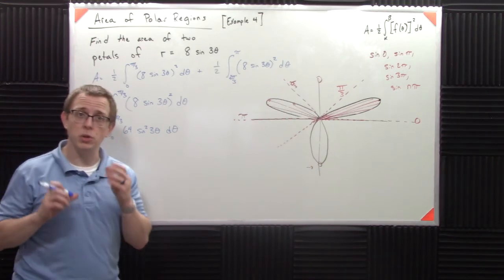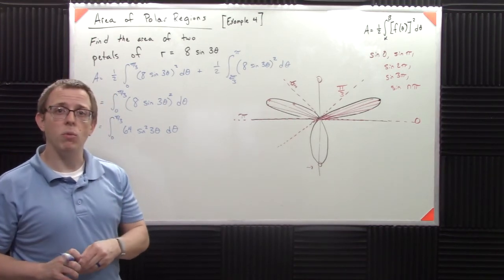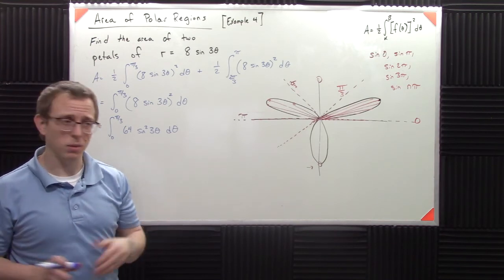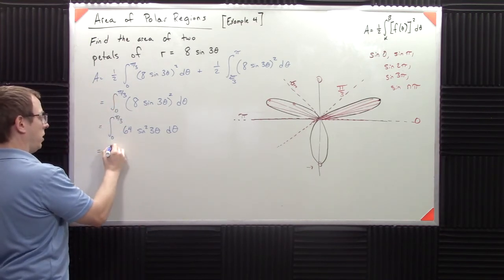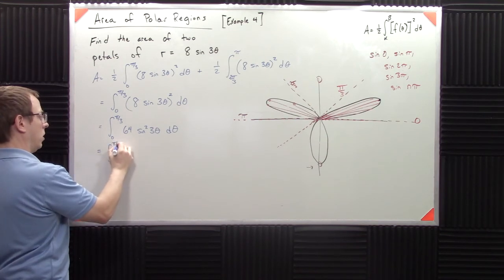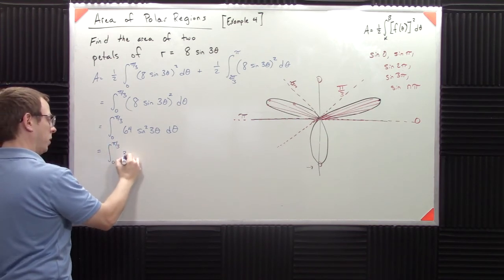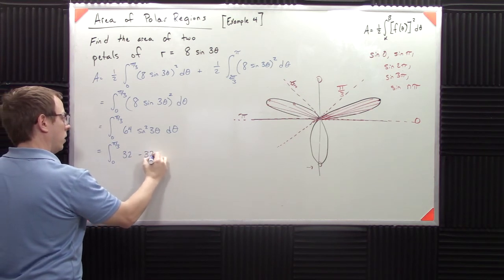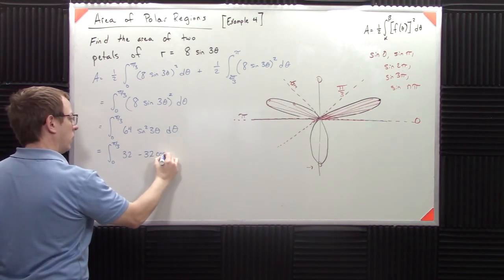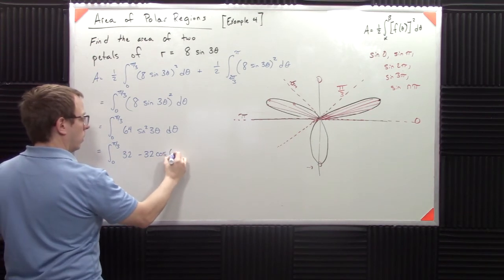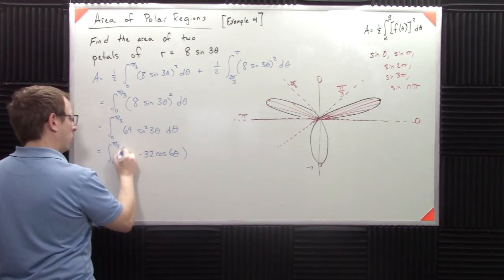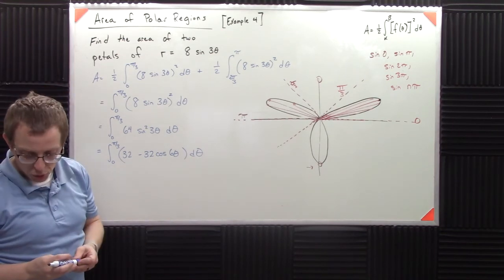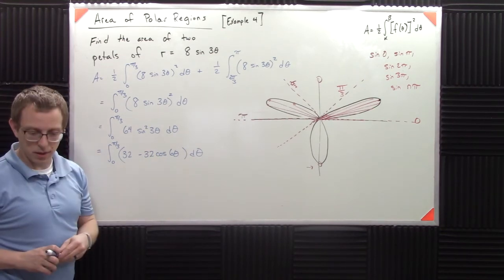Now what we're going to use is we're going to use a double angle identity because sine squareds are bad, we don't like them. So using the double angle identity, we get, we get 32 minus 32 cosine of six theta d theta.